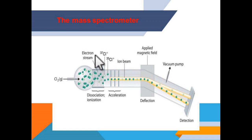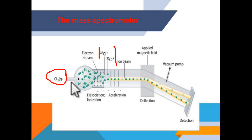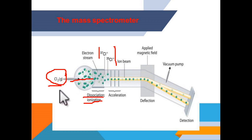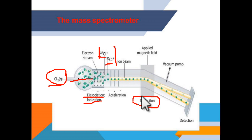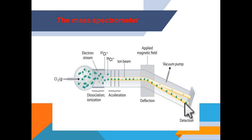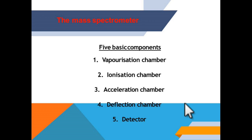Here is a clearer picture. Taking chlorine as a simple example: it has two isotopes. Both are forced to move through, undergo ionization, and then dissociation — the molecule is broken into individual parts, giving chlorine-35 and chlorine-37. They then go through the ion beam acceleration chamber, and in the deflection chamber, the electromagnet deflects the two isotopes so they are detected at different time frames. That is the main function.